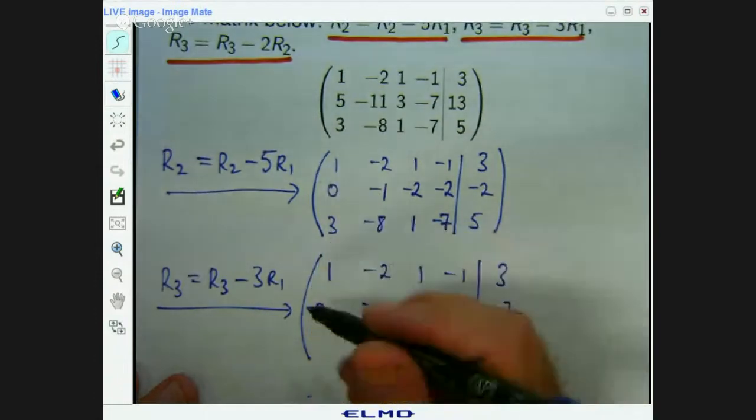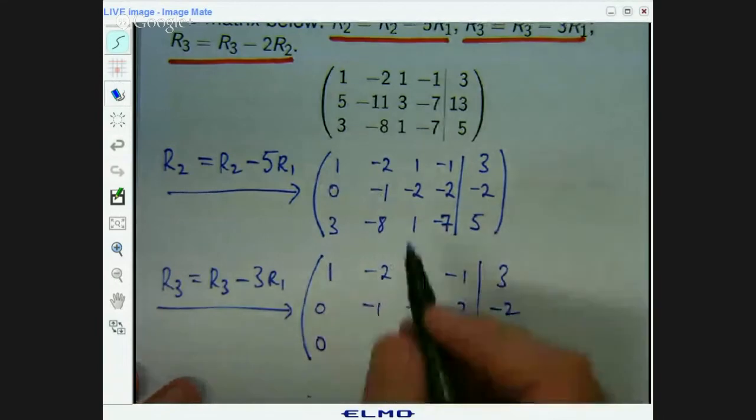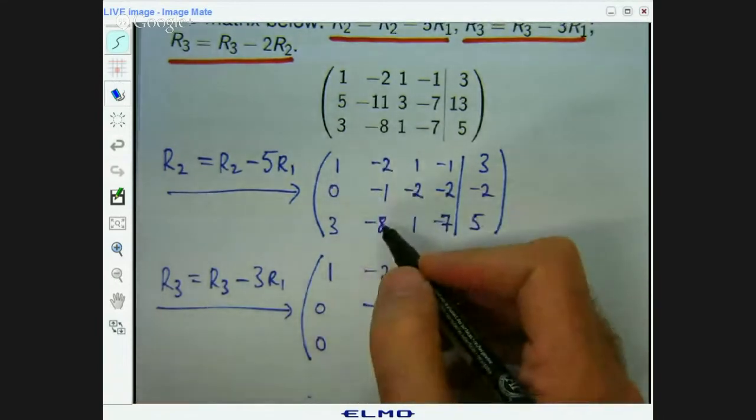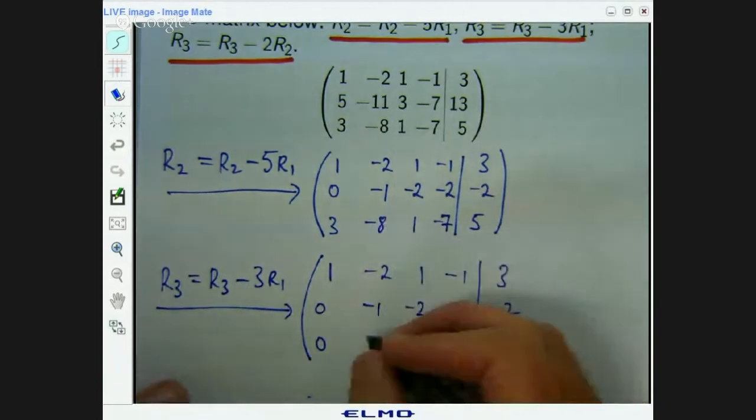Negative 8 minus 3 times negative 2. So that's negative 8 plus 6, which is negative 2.